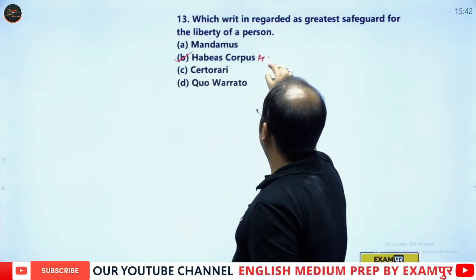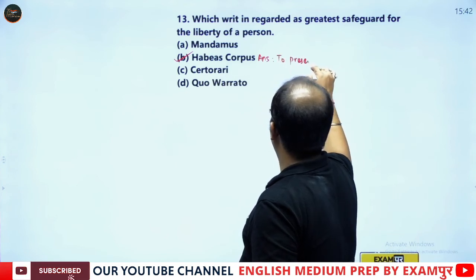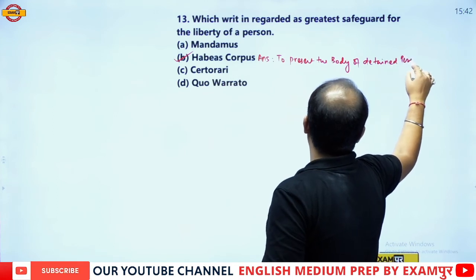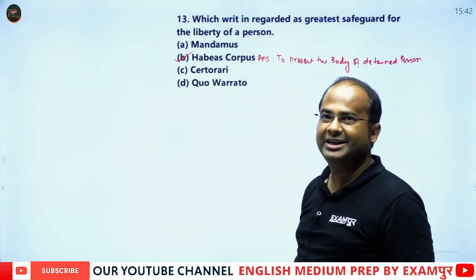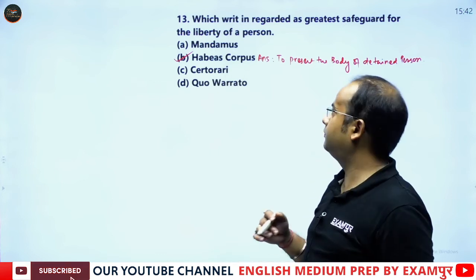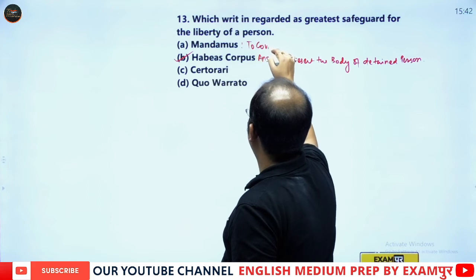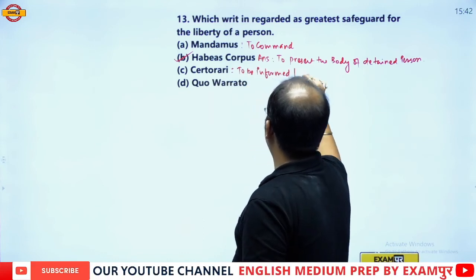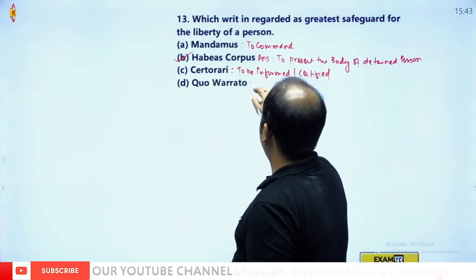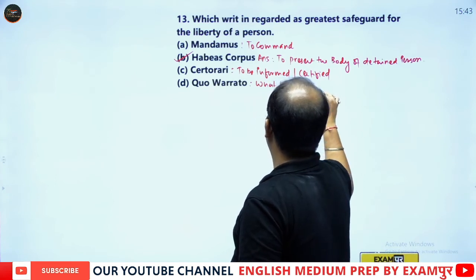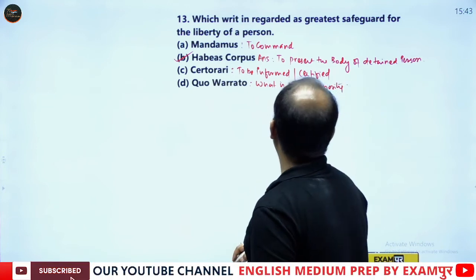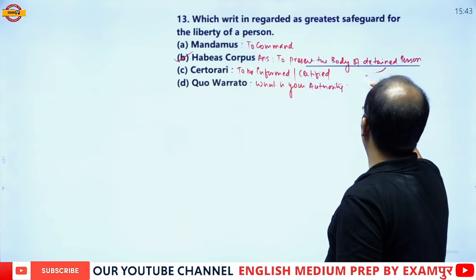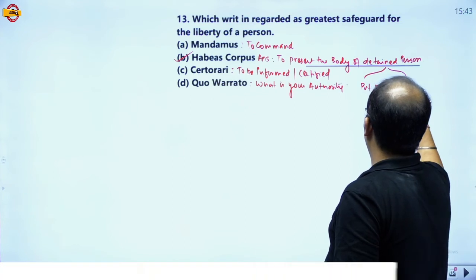The correct answer is Habeas Corpus, which means 'to present the body of the detained person.' If a person is detained illegally, the court will order that the body of the detained person be presented. Habeas Corpus is applicable to both private entities and public entities.